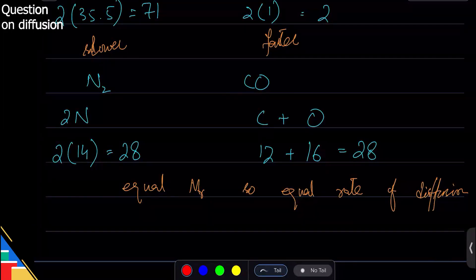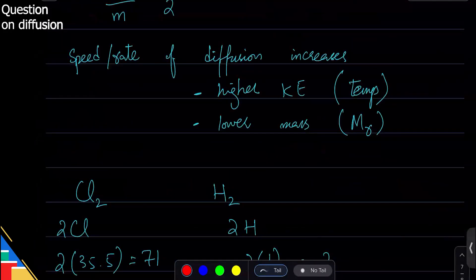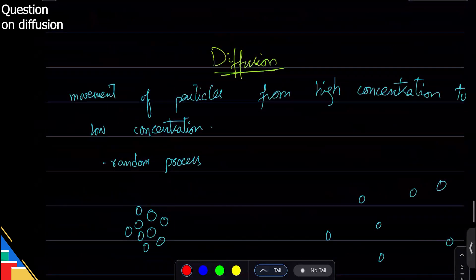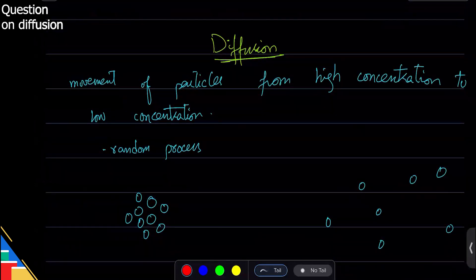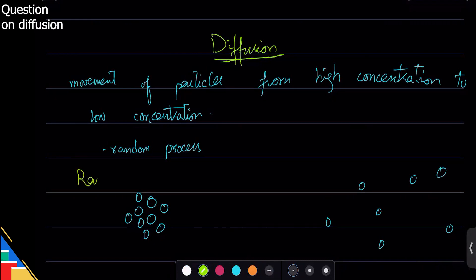So why does diffusion occur? Diffusion occurs because of random collisions. The reason is random motion causes diffusion because they collide with each other and they go further and further away from each other.